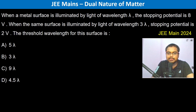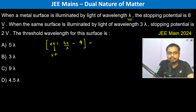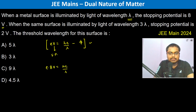When a metal surface is illuminated by light of wavelength lambda, the stopping potential is 8 volts. The formula for the photoelectric effect is e into V equals hc by lambda minus phi, where V is the stopping potential. So the first equation is: e into 8 volts equals hc by lambda minus phi.